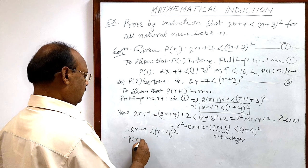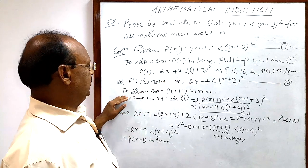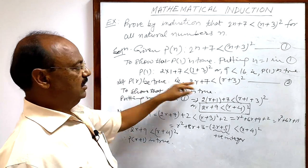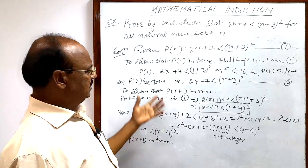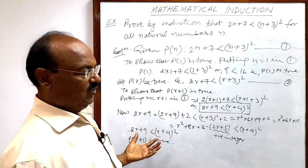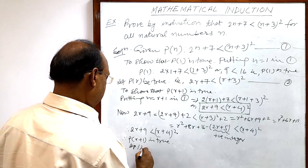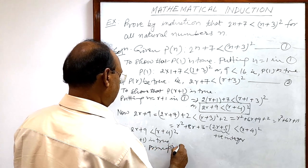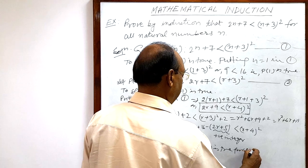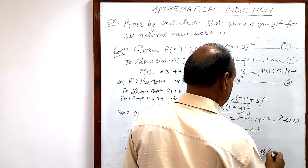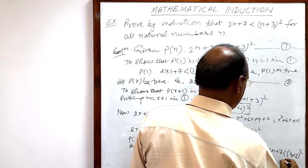Therefore P(r+1) is true. We have now completed all three steps: first, we proved P(1) is true; second, we assumed the statement is true for n=r; and third, we proved the statement is true for n=r+1. Therefore, by the principle of mathematical induction, the given statement P(n) — that 2n + 7 is smaller than (n+3)² — is true for all natural numbers n. Proved.